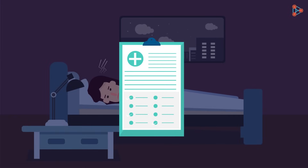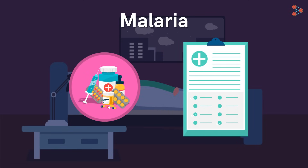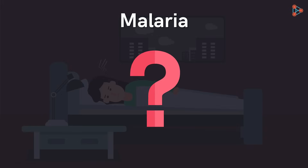A few diagnostic tests revealed that Zara was suffering from malaria, and she was given all the possible best treatments to recover as quickly as possible. But how did she get infected with malaria in the first place? What could have caused it, and how did the infectious agent take over her body? Let's learn about this infectious disease in detail in this video.